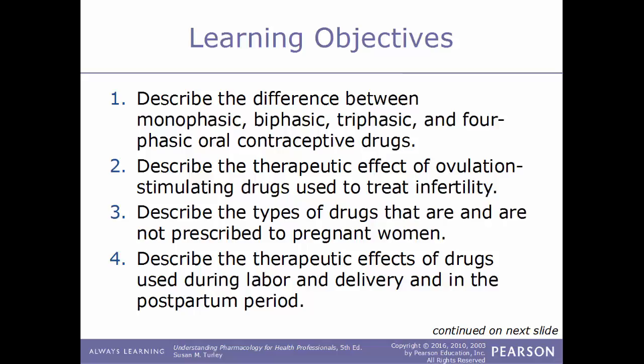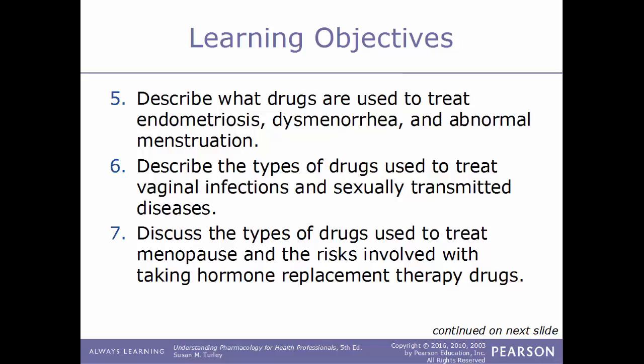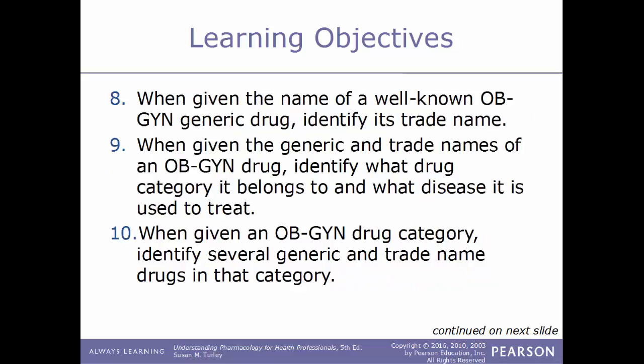Learning objectives for this chapter: describe the difference between monophasic, biphasic, triphasic, and four-phasic oral contraceptive drugs; describe the therapeutic effect of ovulation-stimulating drugs used to treat infertility; describe the types of drugs that are and are not prescribed to pregnant women; and describe the therapeutic effects of drugs used during labor and delivery and in the postpartum period.